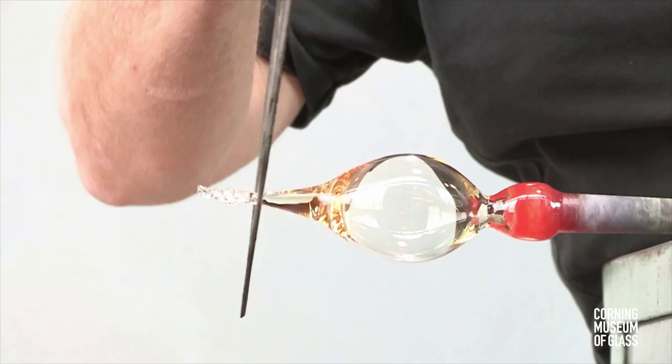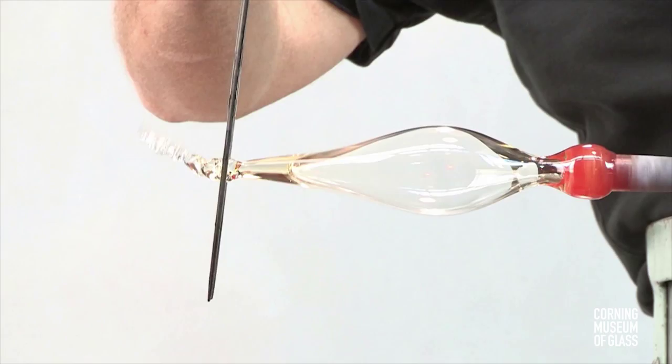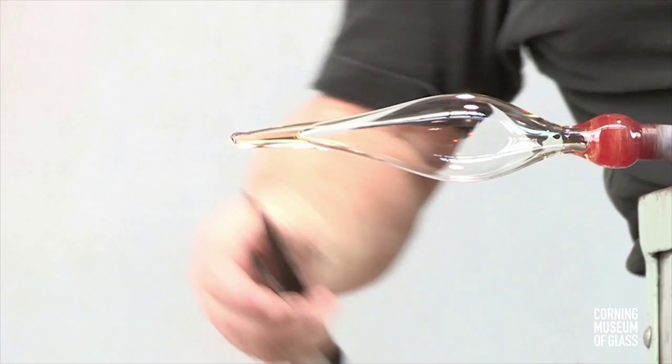Up until the later 17th century, in Venice, goblets were always built on the blowpipe. The process begins by the glassblower making the bowl of the goblet.